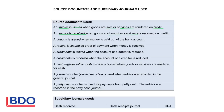A check is issued when we pay money out of the bank account. This can also be an electronic transfer. A receipt is issued when someone pays money to the business as proof that the payment was made.